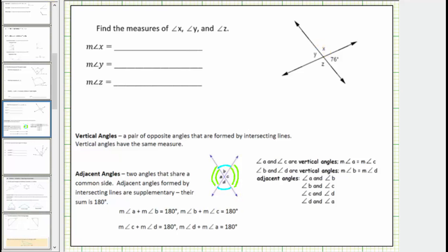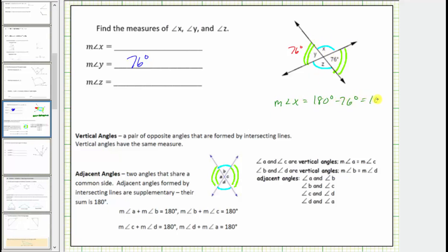Going back to the question, notice angle X and angle Z are vertical angles, as well as angle Y and the given angle that measures 76 degrees. Because vertical angles are equal in measure, the measure of angle Y must be 76 degrees. Next, angle X and the given angle of 76 degrees are adjacent and supplementary, so the measure of angle X plus 76 degrees must equal 180 degrees. Therefore, the measure of angle X equals 180 degrees minus 76 degrees, which equals 104 degrees.